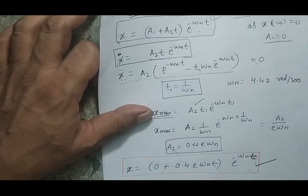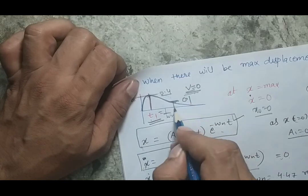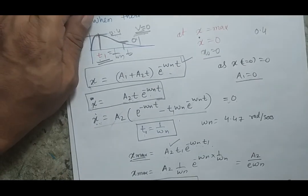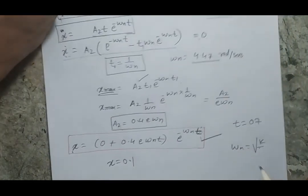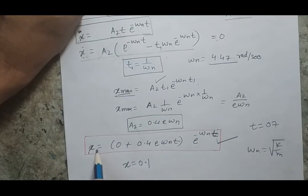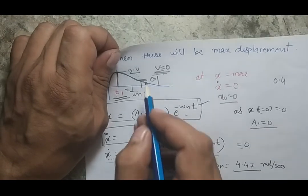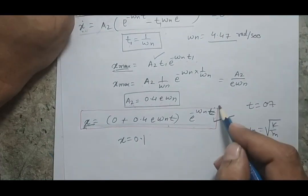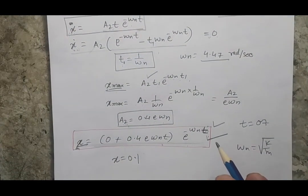If I want to find when x equals 0.1, I put 0.1 into the response expression and solve for time t. On the other hand, if I want to find the response at t = 0.7 seconds, I put t = 0.7 into the expression, knowing that ωₙ = 4.47 rad/s. In this way, once you have the response equation, you can find displacement by putting in the time, or find the time by putting in the displacement.